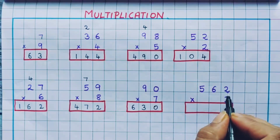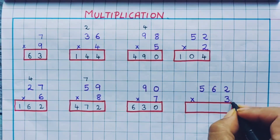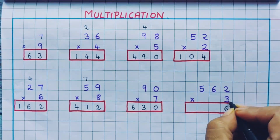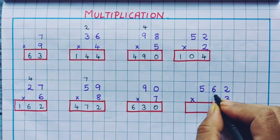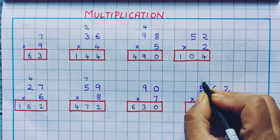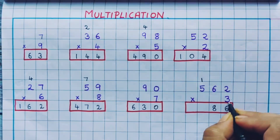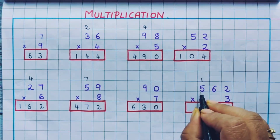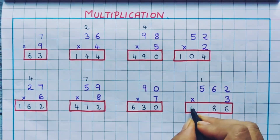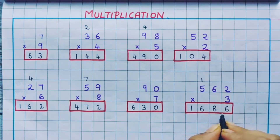Next: 562 into 3. Let's multiply first. 3 2s are 6. Next, 3 6s are 18, so 1 will be written as a carryover and 8 here. Now 3 5s are 15, and 15 plus 1 is 16. So the answer is 1686.